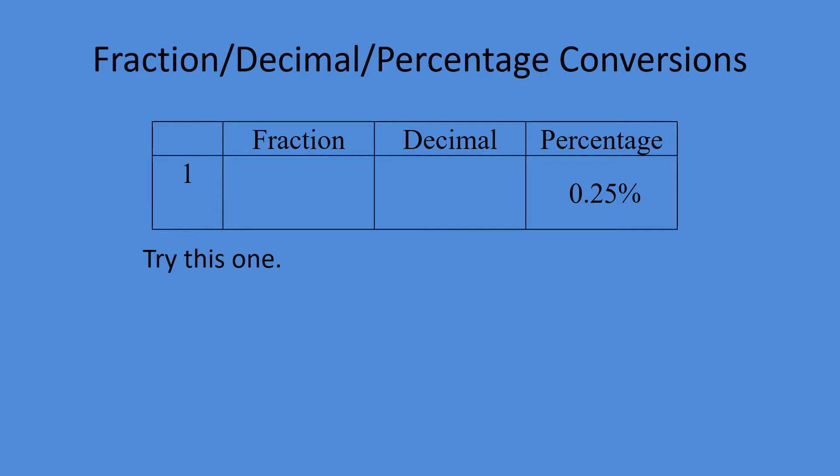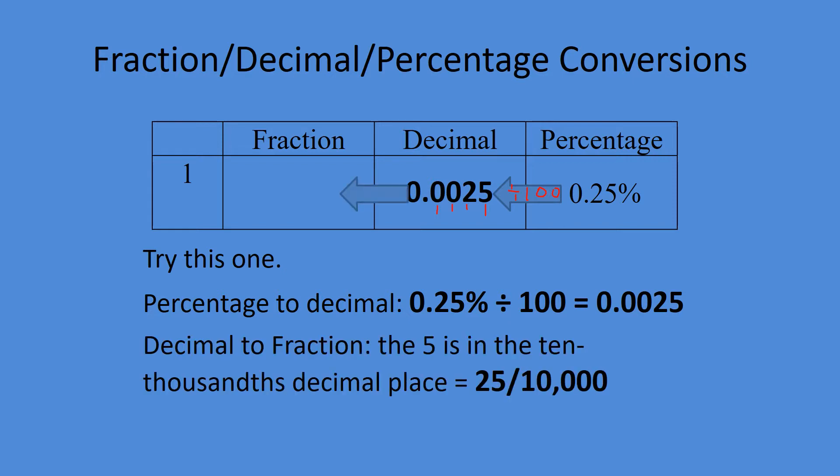0.25%. Let's divide by a hundred. We end up with 0.0025. We've got tens, hundreds, thousands, ten thousands, so the denominator will be ten thousand, and we just put 25 over 10,000.